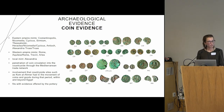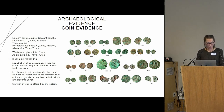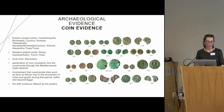This gives insight on the penetration of coin circulation into the countryside through the Mediterranean trade network, and shows the involvement of countryside sites such as Koma Lahmer — located in Alexandria's hinterland — in the movement of coins and goods within Egypt and beyond. The numismatic evidence fits with the pottery evidence, which shows a trend towards imports from the Eastern Mediterranean.